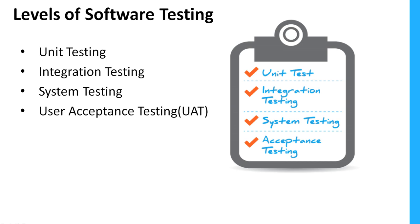Unit testing is normally done by the developer at the program level. That's why we call it a white box testing technique — it is completely at the program level. The developer performs this testing, and it is the first level of testing.